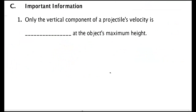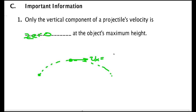An important fact: only the vertical component of the projectile's velocity is zero at the object's maximum height. At that point the object still has a horizontal velocity component — vx-naught·î — because its x component never changes. Its y component, the upward component, is zero at the top, but not its x component.